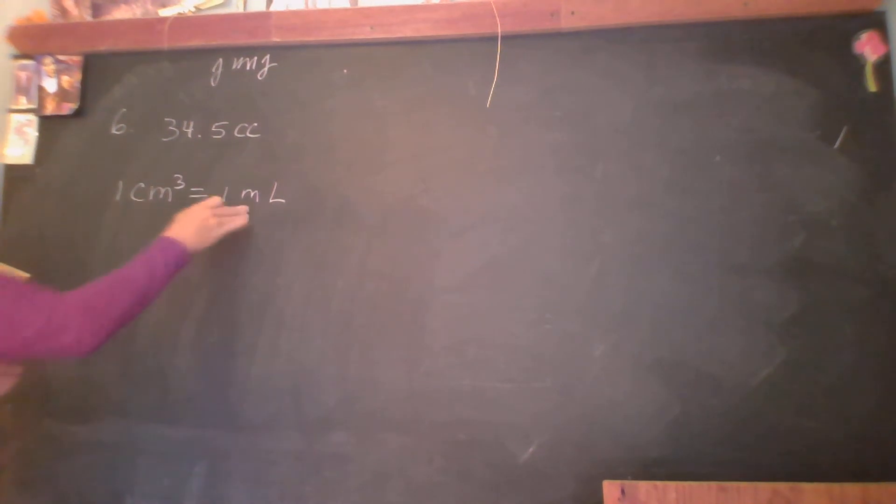Yes. A cubic centimeter is equivalent, let's just say it's the same as a milliliter. But I thought a milliliter was one one-thousandth. A cubic centimeter equals one milliliter.